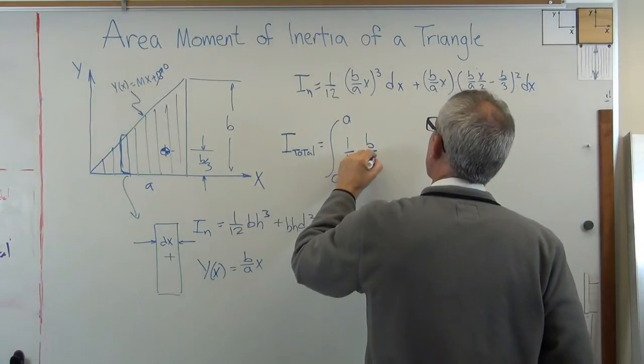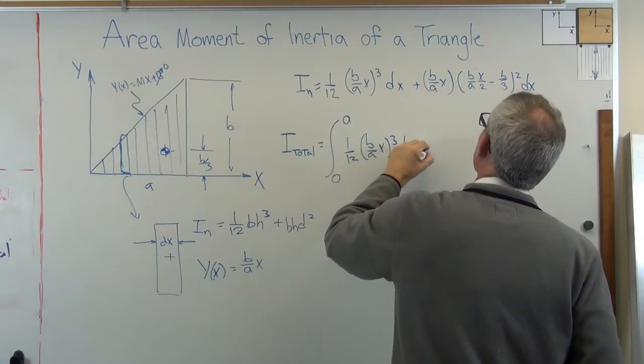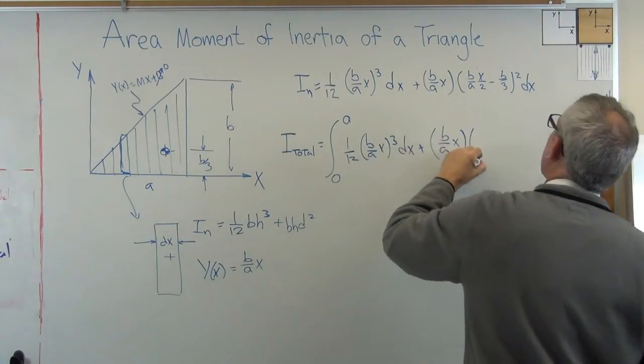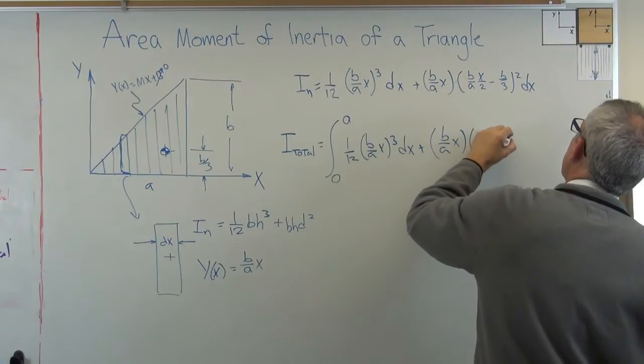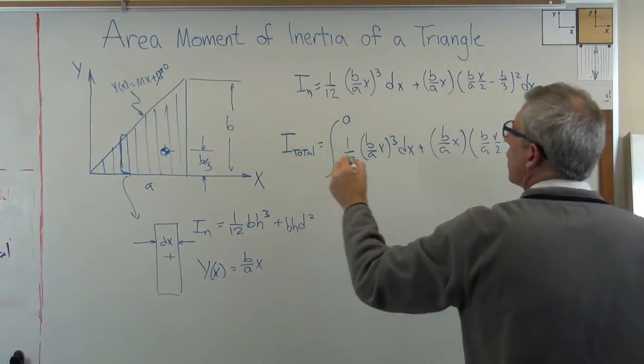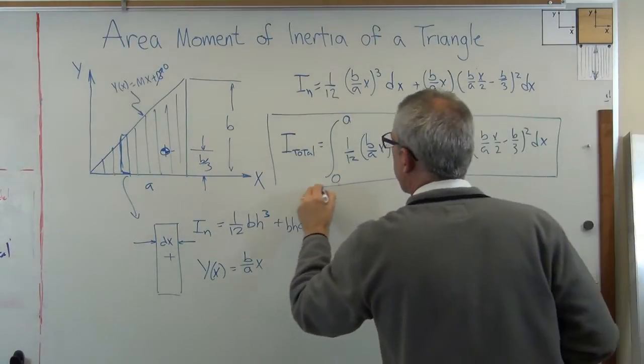1 over 12 b over ax cubed dx plus dx. b over ax over 2 minus b over 3 squared dx.